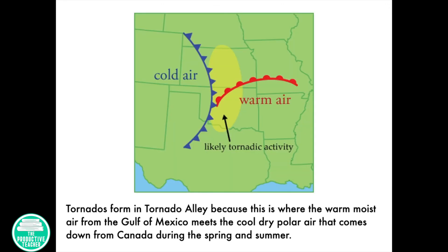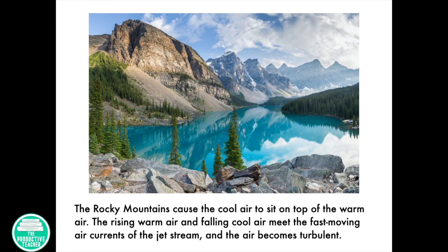Tornadoes form in Tornado Alley because this is where the warm moist air from the Gulf of Mexico meets the cool dry polar air that comes down from Canada during the spring and summer. The Rocky Mountains cause the cool air to sit on top of the warm air. The rising warm air and falling cool air meet the fast moving air currents of the jet stream and the air becomes turbulent.